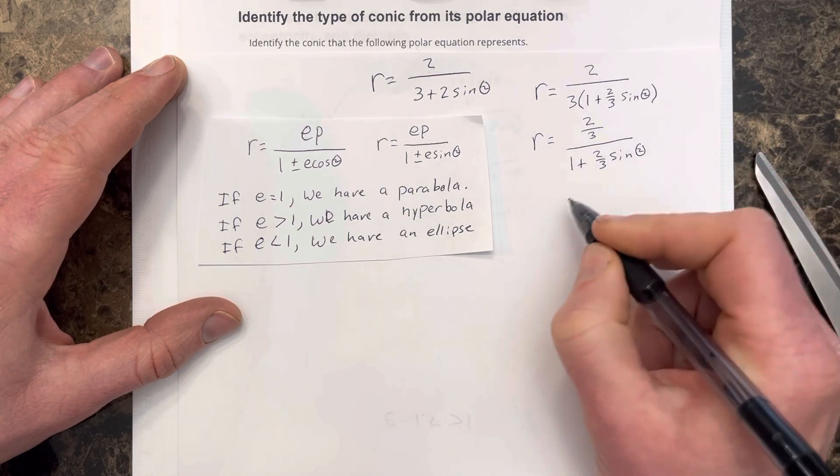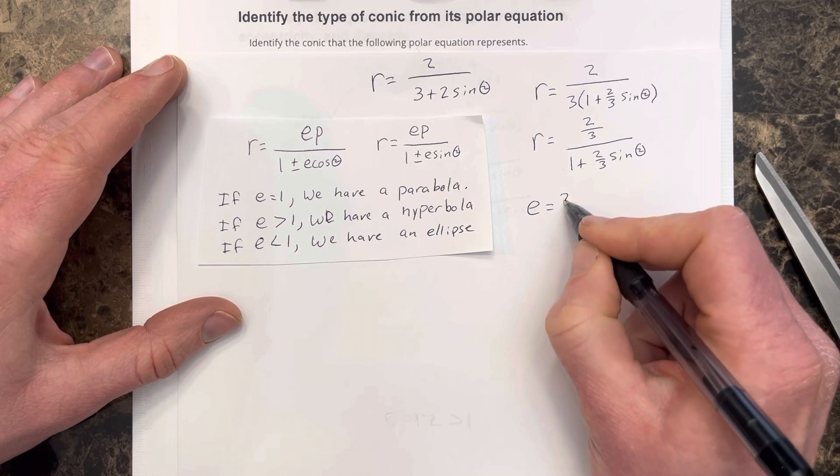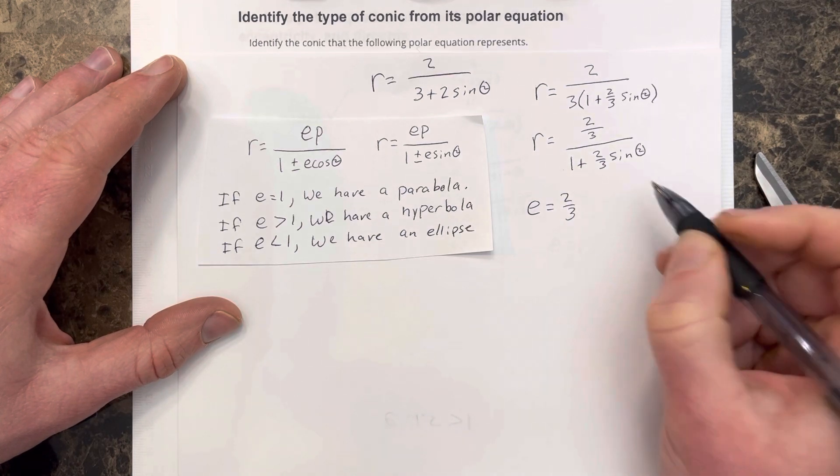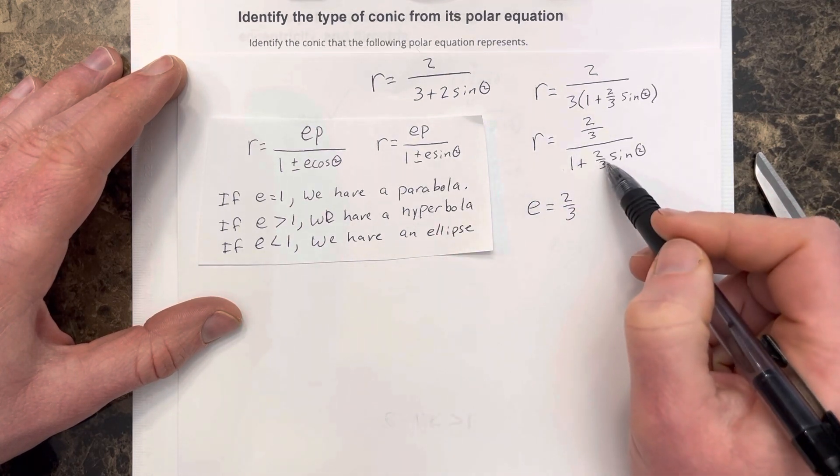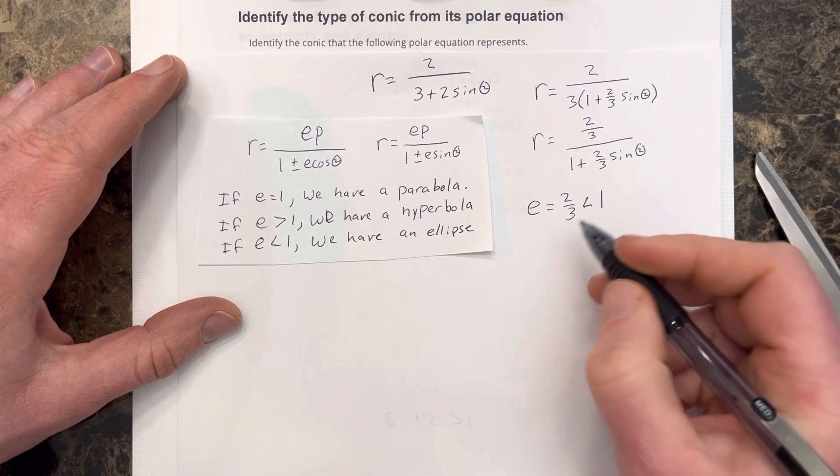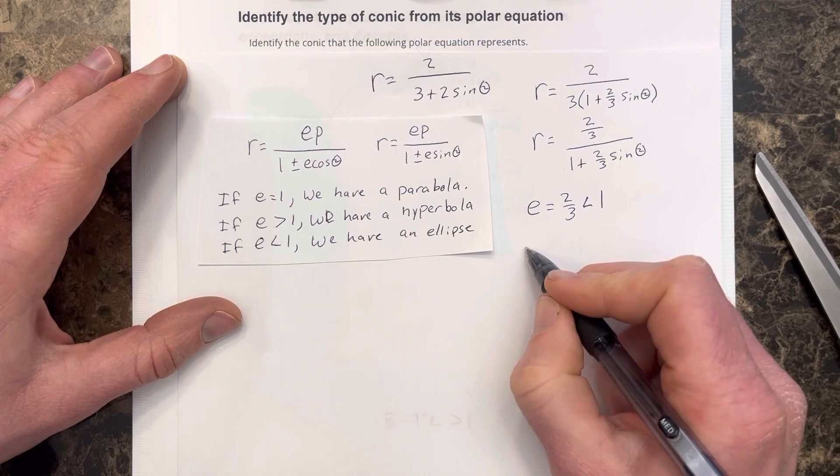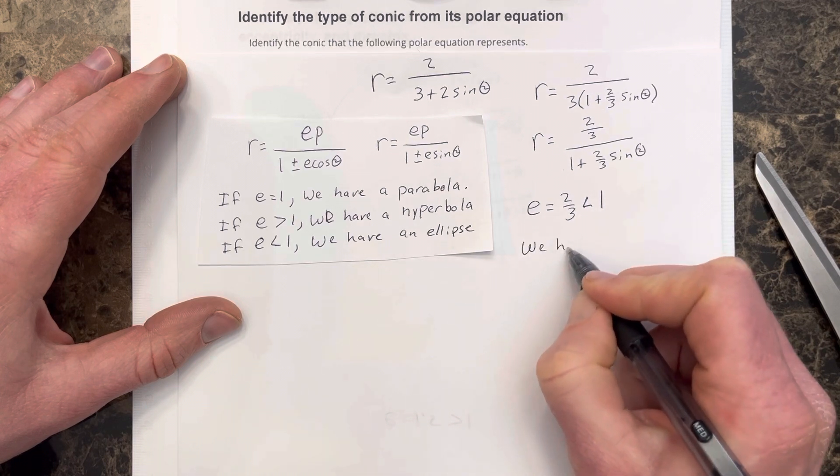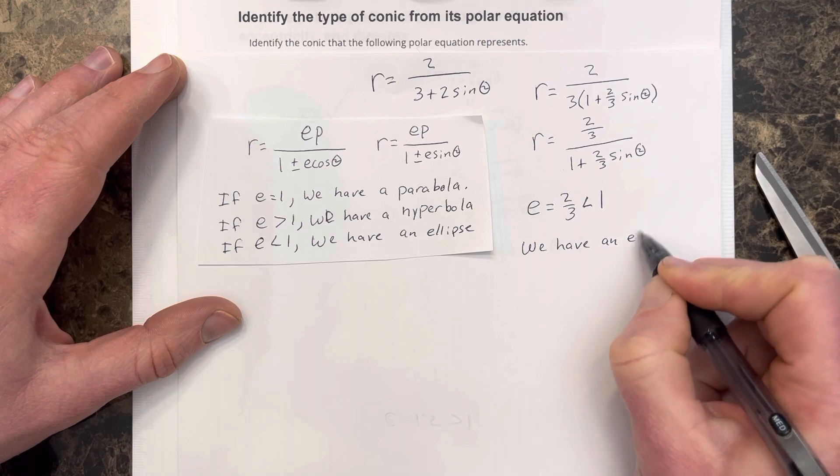So that tells me that my e value is equal to 2 thirds. Right here, this is the e value, 2 thirds. And that is less than 1. And anytime we have an e value less than 1, we can say that we have an ellipse.